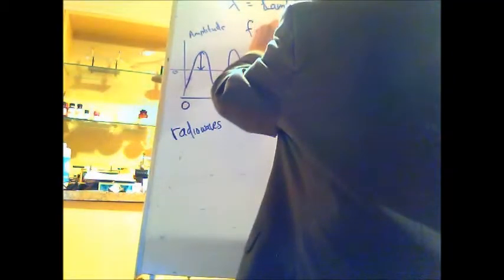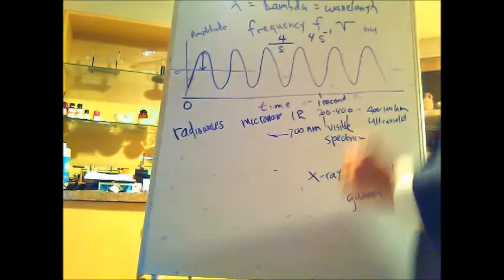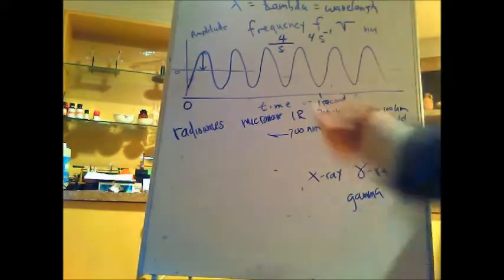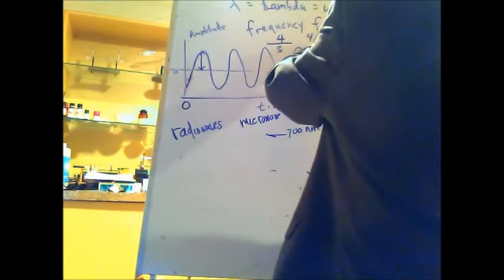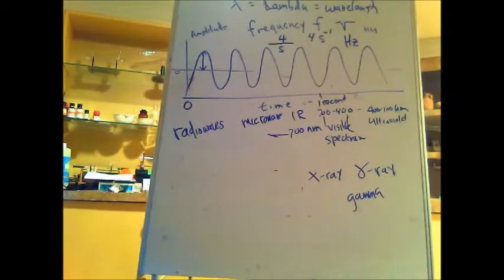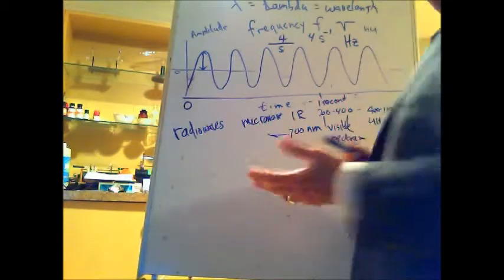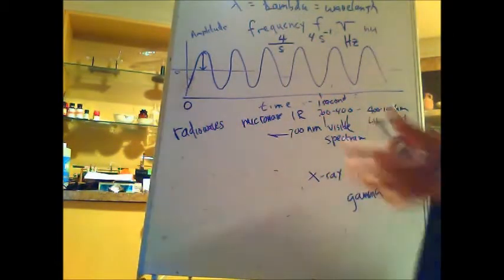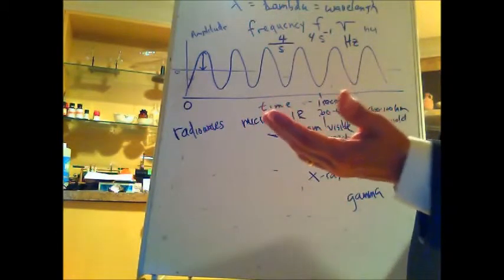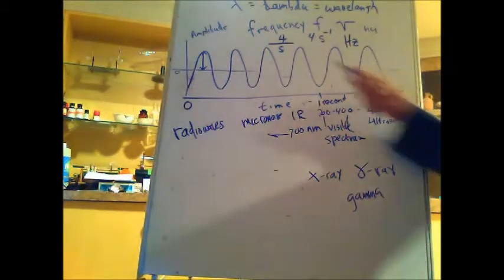We don't say 'waves' — we just say four per second, written as four over second, or four second-minus-one, a reciprocal second. This unit of one over second is called the hertz, so we would say this has a frequency of four hertz. Radio waves, for example: an AM station broadcasts its signal in kilohertz — thousands of cycles per second — while an FM station broadcasts in megahertz, something like 780 megahertz, or 780 million cycles per second.